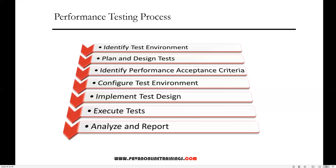The third step is to identify performance acceptance criteria, which includes goals and constraints for throughput, response times, and resource allocation, as well as project success criteria. Testers should be empowered to set performance criteria and goals, since project specifications often don't include a wide enough variety of performance benchmarks. Finding a similar application to compare against is a good way to set performance goals. The fourth step is to configure the test environment — prepare the testing environment before execution and arrange tools and other resources.